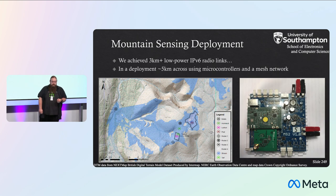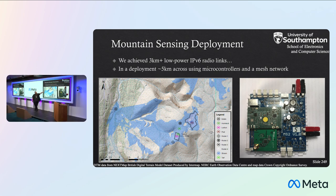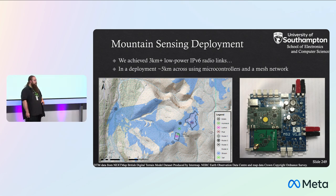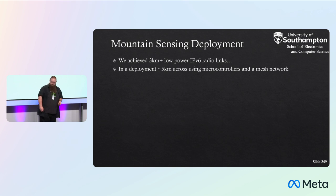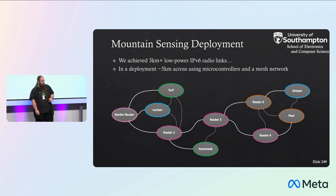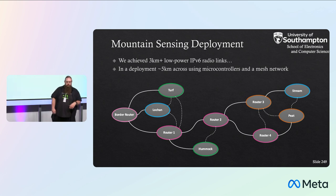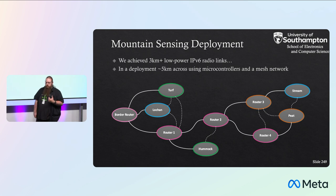What we did was a crazy deployment going from a shed that happened to have Wi-Fi, internet, and power, all the way up the side of a mountain in Scotland, doing a multi-hop mesh network. The hardware was small devices — tiny microcontrollers — but the deployment had three-kilometre-plus radio links. We were covering a site that was over five kilometres wide with a multi-hop mesh network. Yes, single points of failure — this was a research project, not full-blown production deployment — but this is the sort of thing you can do with these technologies.